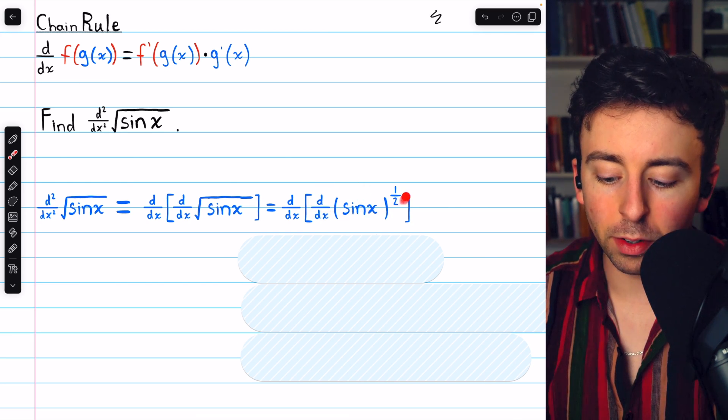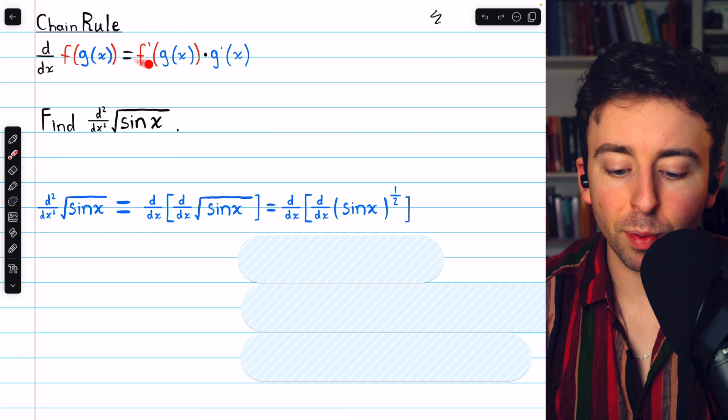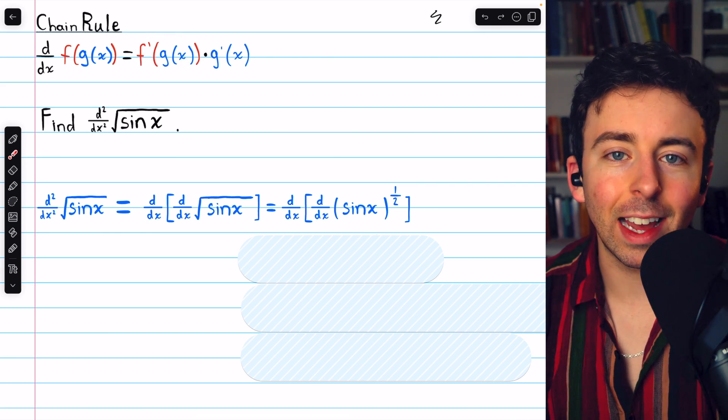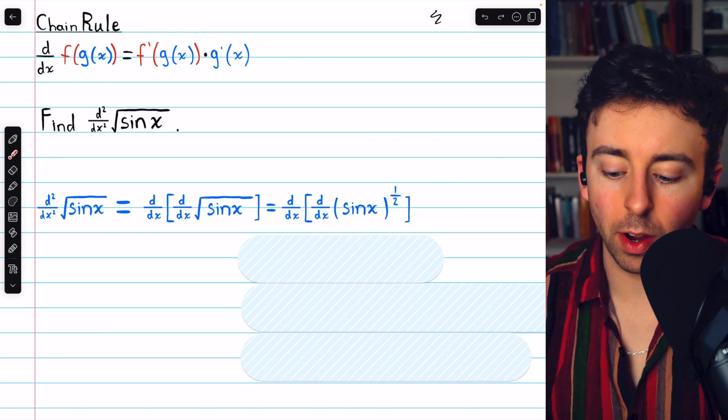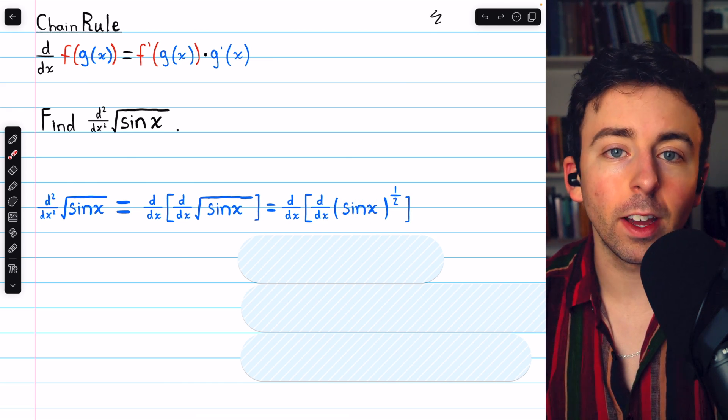Now we can take the first derivative by using the chain rule. We begin with f prime of g of x. That's the derivative of the outside function, which is the power of one-half, leaving the inside function unchanged.